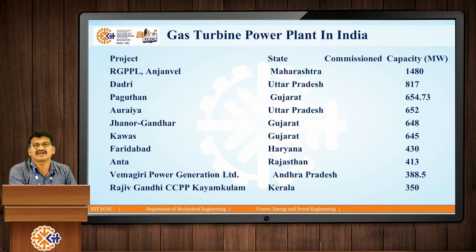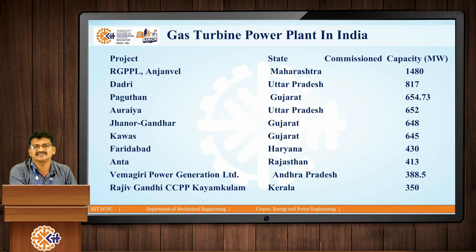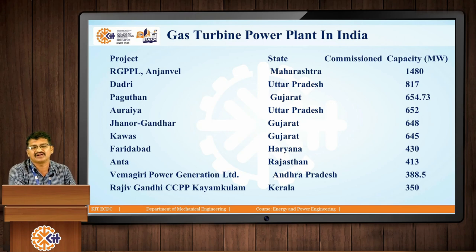You can see some names of gas turbine power plants in our country — some private companies are also there. These are the gas turbine power plants available with their capacities and states mentioned. Dadri, Aurya, Antha, Kawas, Faridabad — these are some names of power plants available in our country. Due to the constraint that natural gas is used for other purposes, gas turbine power plants generate a maximum of about 25,000 megawatts in our country.